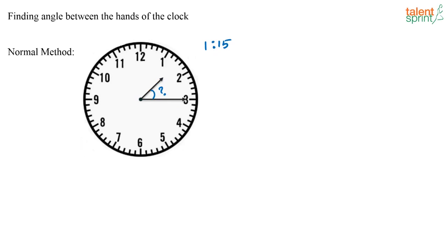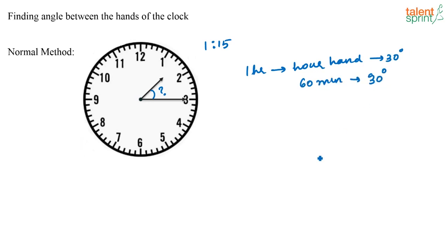From 1 o'clock to 2 o'clock, the hour hand covers 30 degrees in 1 hour, or 30 degrees in 60 minutes. So in 5 minutes, the angle covered by the hour hand is 30 × 5/60, which equals 2.5 degrees. Every 5 minutes, the hour hand covers 2.5 degrees.